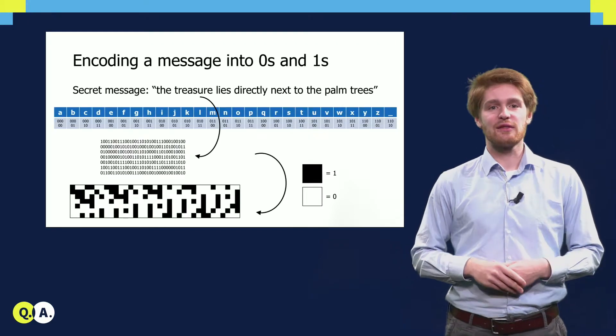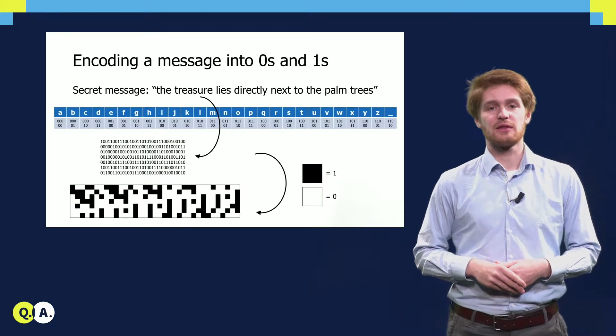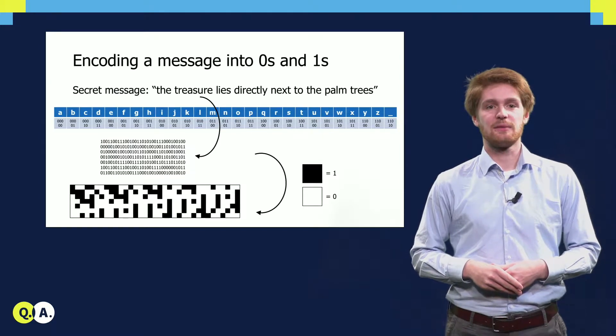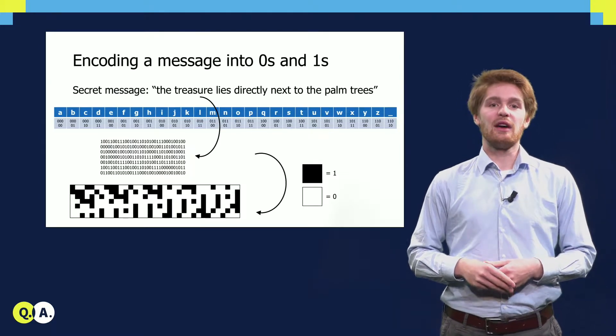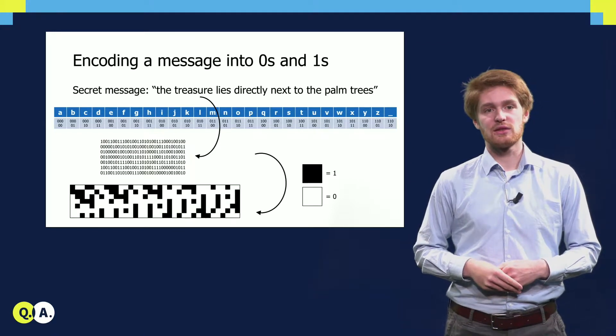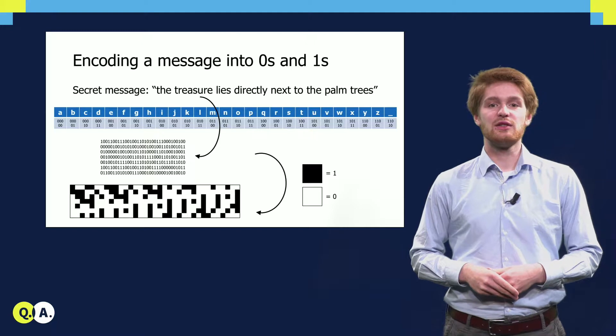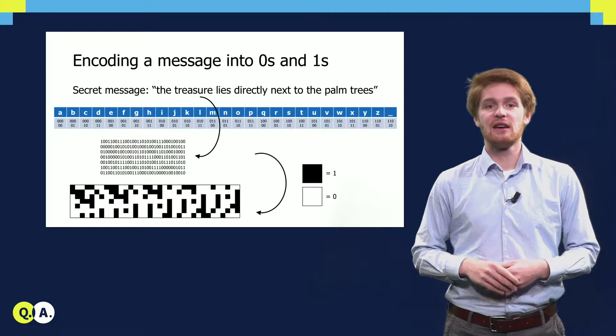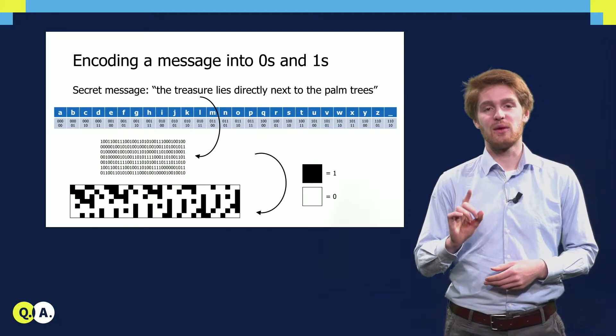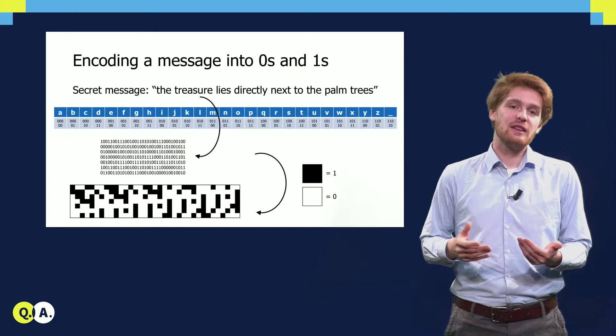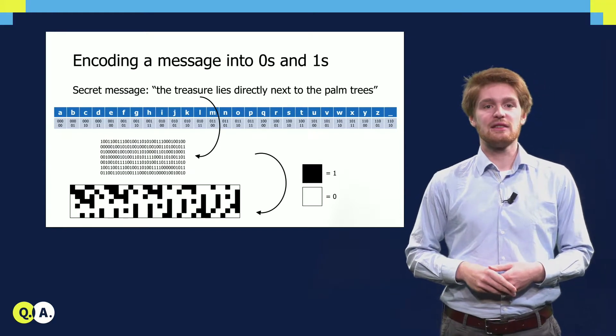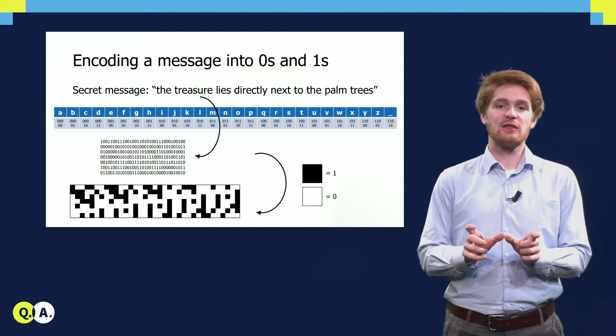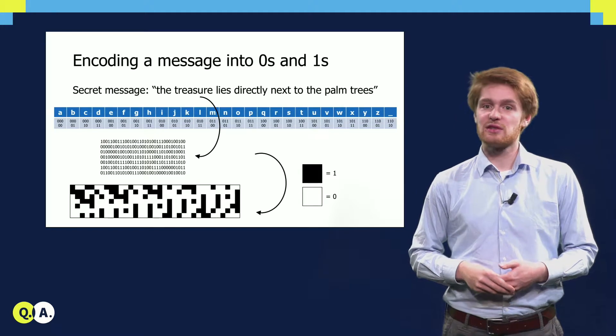First, let us translate a piece of text to a sequence of zeros and ones. Suppose we have the following secret message. The treasure lies directly next to the palm trees. For every letter we have now made a sequence of five zeros and ones. For example, every letter A we encode using the sequence 00000, and the letter T as 10011. By using this dictionary we can write every letter in the secret message as a block of five digits, and by gluing these blocks together we have now translated the message into just zeros and ones.